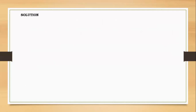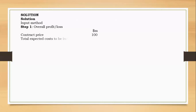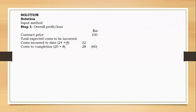We need to account for this transaction for the year ended 31st December 20X1. Instead of using the output method, we are now using the input method, but it's the same question. If you haven't gone through the previous video, I advise you to go there. The first step is to determine the overall profit or loss: the contract price is 100 million dollars, and we less the total expected costs. From the question, cost incurred to date is 24 million and cost to completion is 20 million.